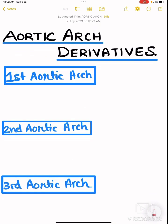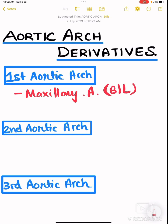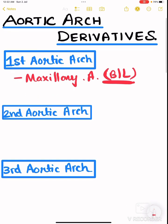From the first aortic arch, the maxillary artery develops — and it develops bilaterally.